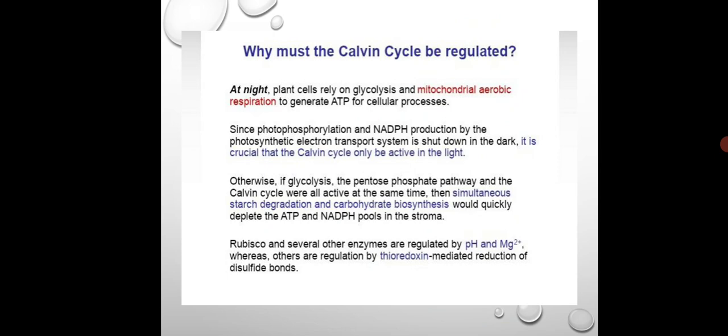To control the Calvin cycle — when not in need, it must stop; and when there is need, it must be active. That is the concept of regulation: when there is no need, it must stop; when there is need, it must get activated.